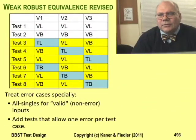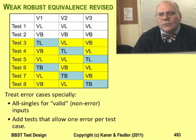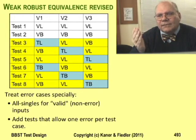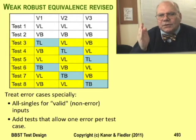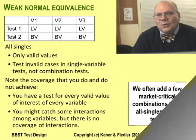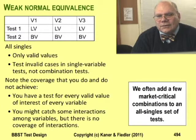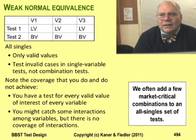If you want to include error handling cases in combination tests, it's usually better to have only one invalid value per test. If you want to combine invalid values, do that after you've seen what happens when you combine all valid values with just one invalid. Weak normal equivalence strips the tests of the invalid values, achieving all singles coverage of the valid cases.